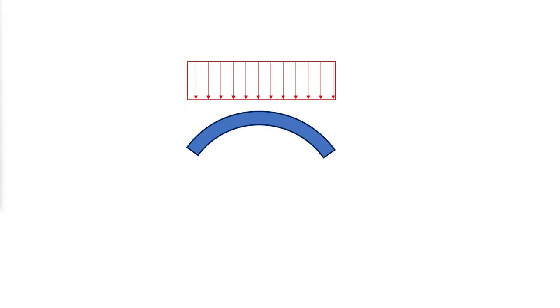Vertically curved members in building structures are designed for combined axial compression and in-plane flexural loads. Although the effect of curvature on the lateral torsional buckling strength is significant, the provisions for yielding and local buckling in AISC specifications Chapters B and F can be used without modification for most curved members in buildings. This video discusses conditions where the AISC specification provisions may not be applicable.